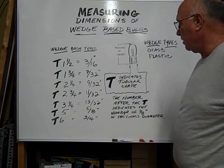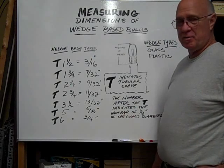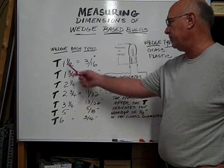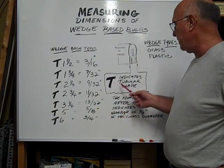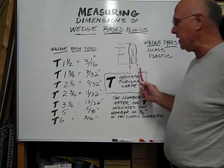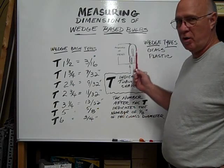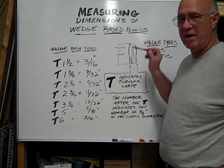Glass wedge-based bulbs are indicated by a T number for their diameters. You'll see the different sizes here. The T determines that it is a tubular-shaped bulb, flat on the sides and usually round on the top.